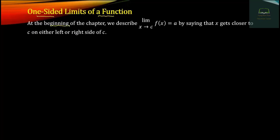This is the beginning of the chapter on limits. The limit as h tends to c of the function of h is equal to a. The function of h is equal to a, meaning as h approaches c, the function value approaches a.